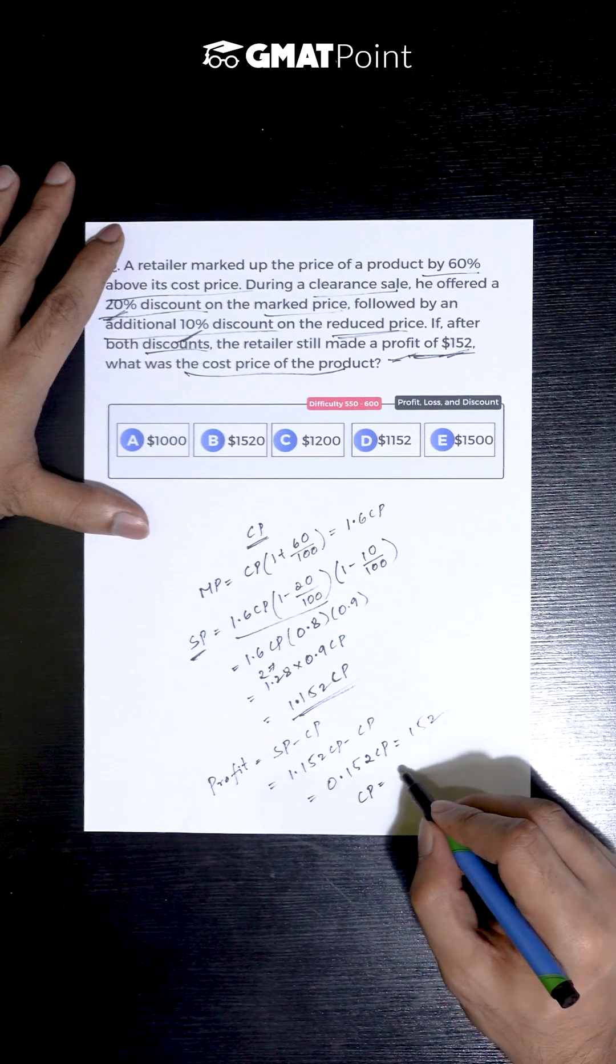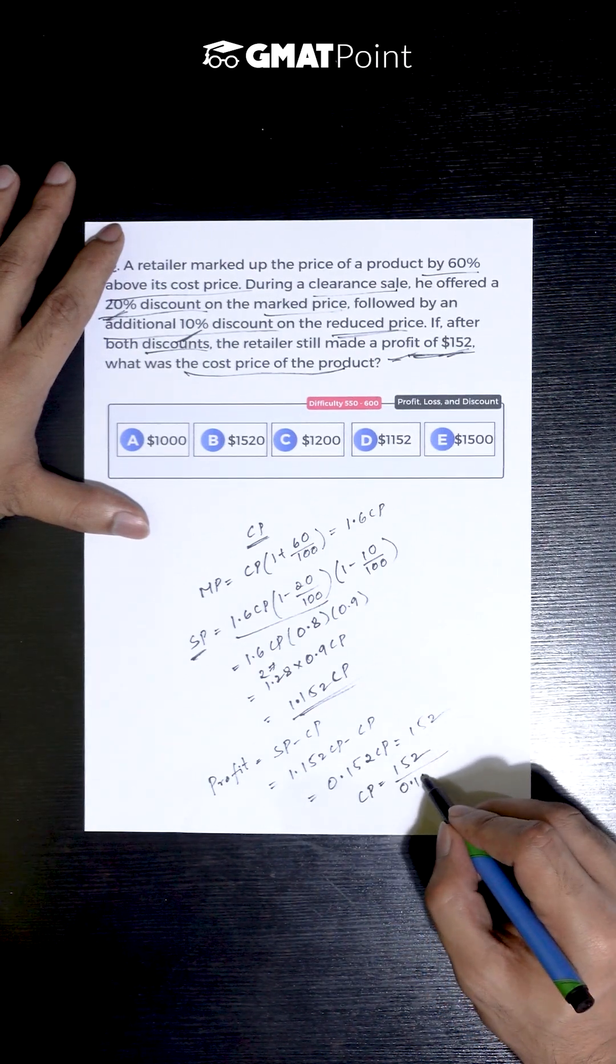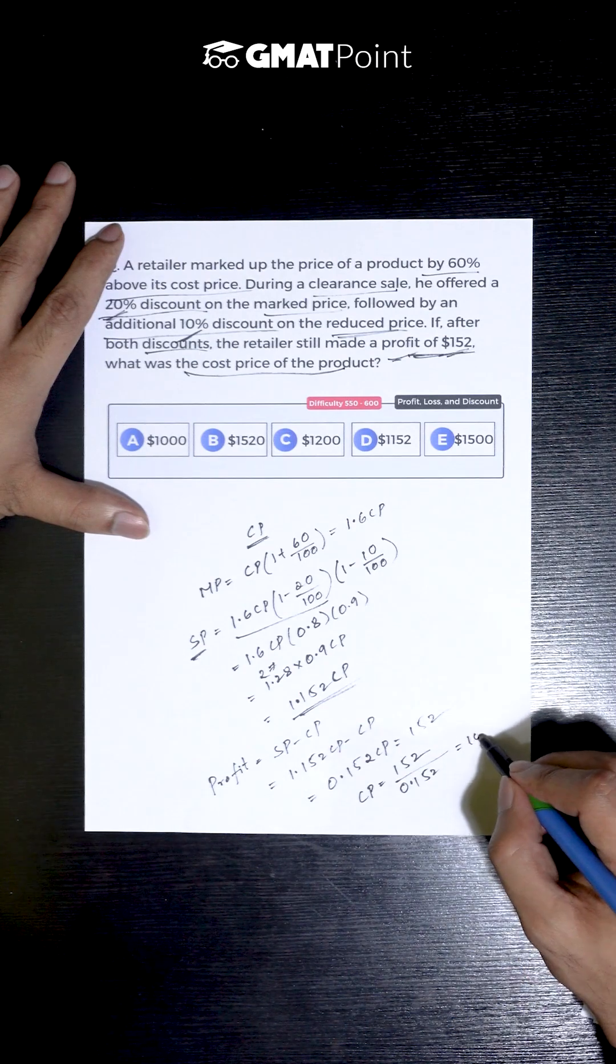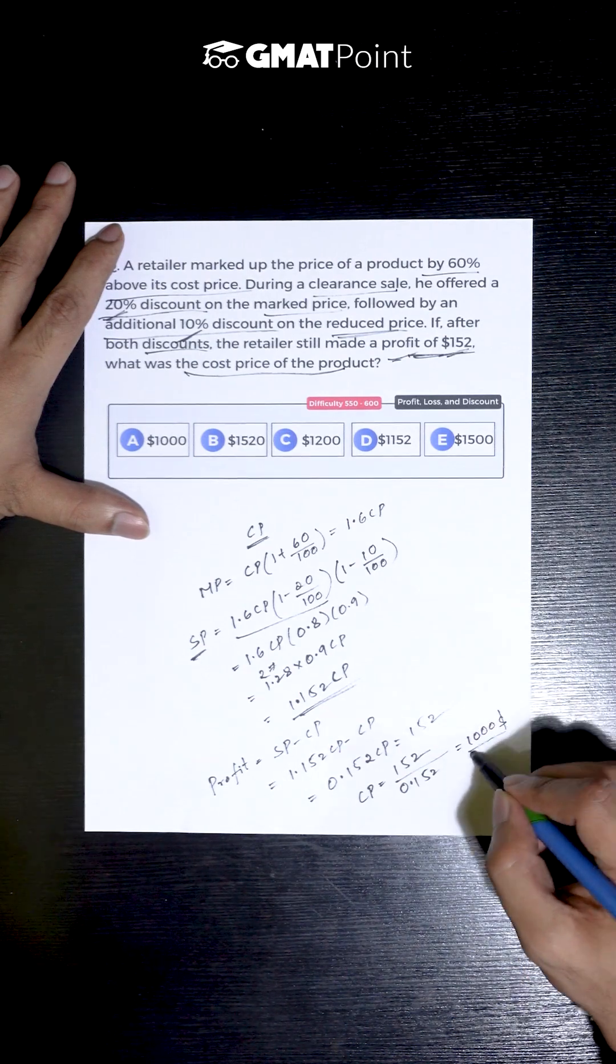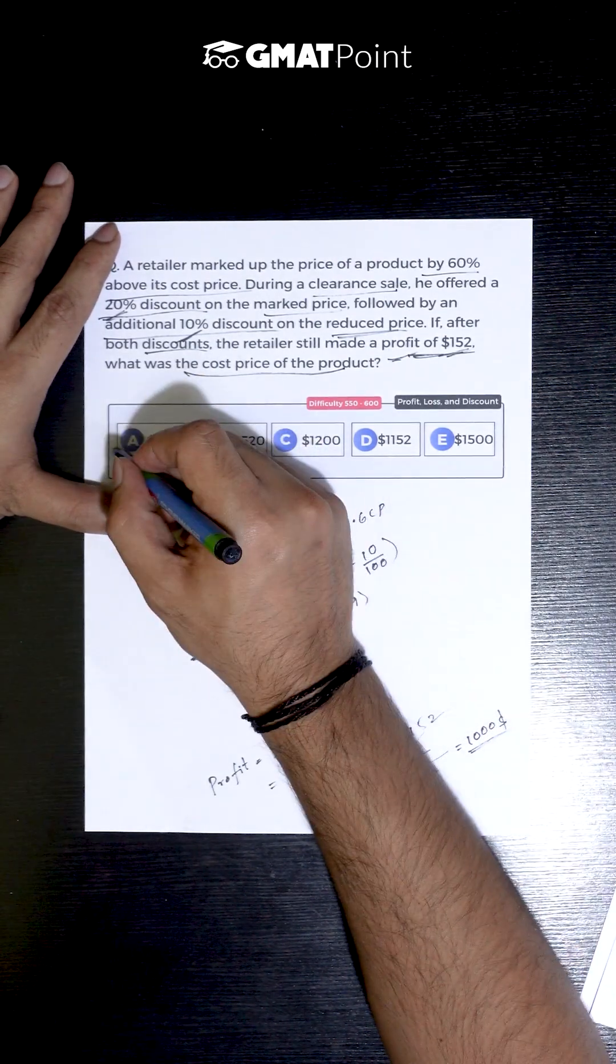So the cost price of the product can be calculated as 152 divided by 0.152, that is nothing but $1000. So the cost price of the product is $1000 and the correct answer is option A.